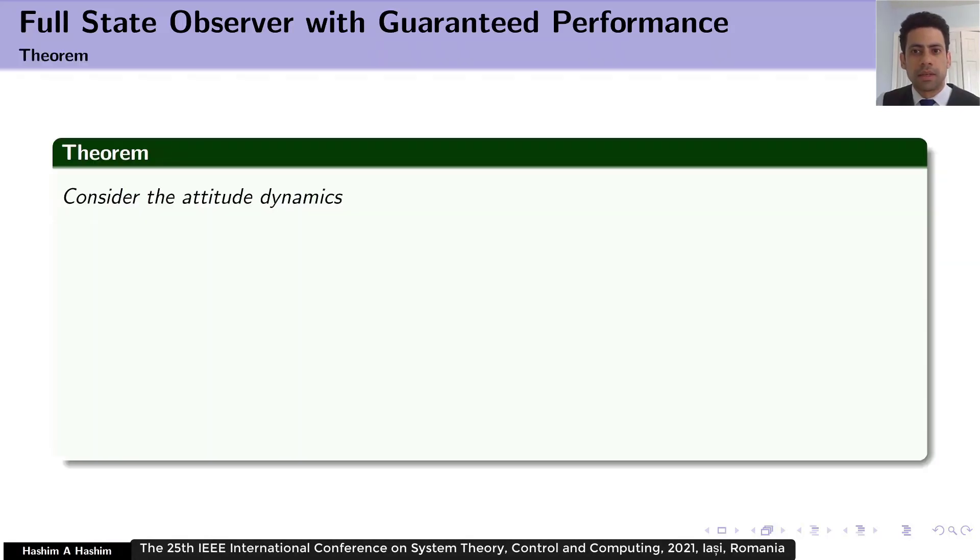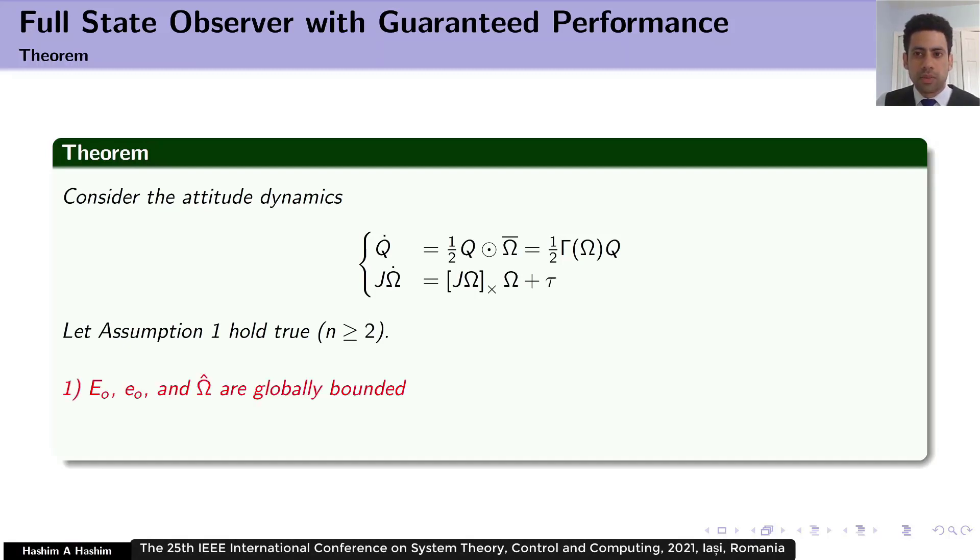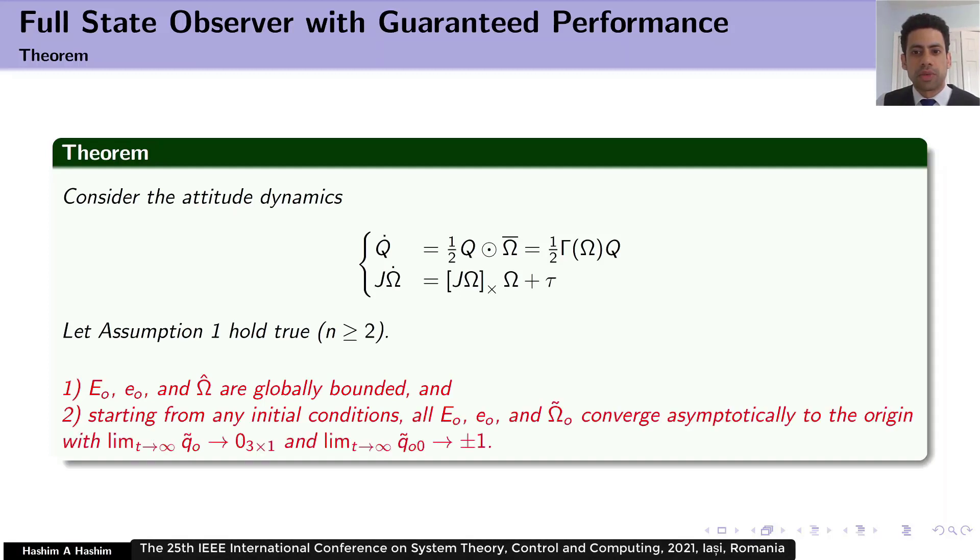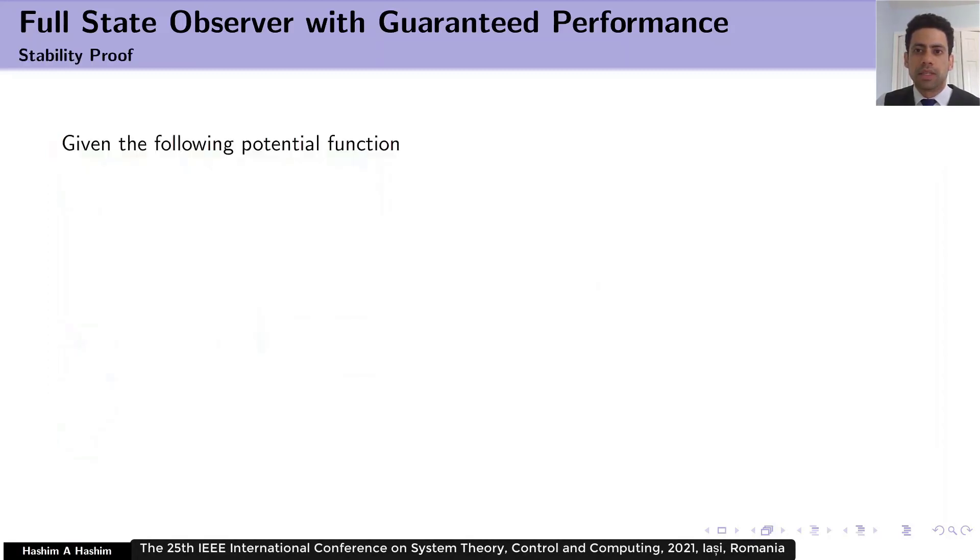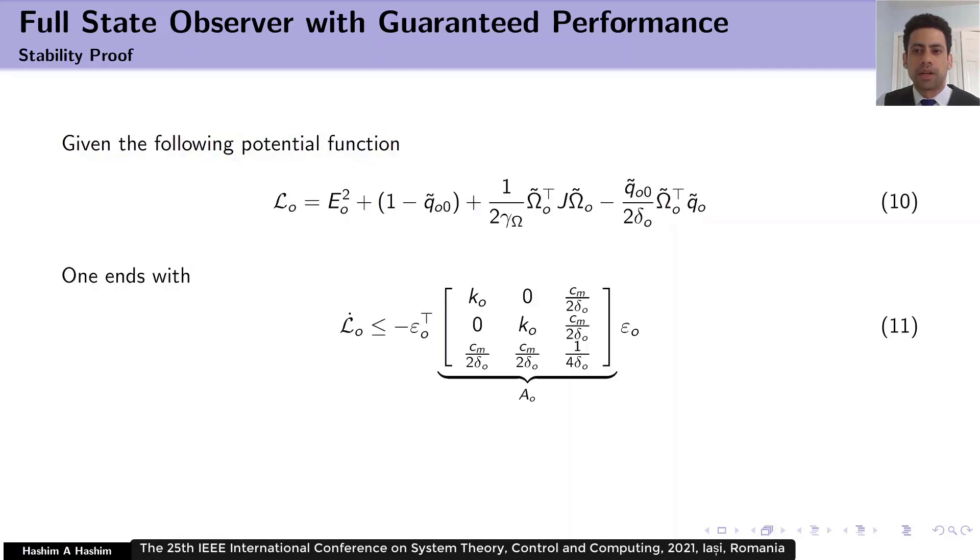Now, let's discuss the theorem. Remember the true attitude dynamics. Let us suppose that assumption 1 holds true. Therefore, n is greater than or equal to 2. This way, the components that we see here are globally bounded. Also, starting from any initial condition, all the error components converge asymptotically to the origin. Now, let's talk about the stability proof. Given the potential function L_O, we arrive to the inequality that we see here. Where E_O combines estimation errors of orientation and angular velocity.